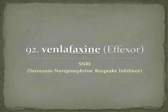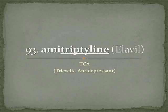Venlafaxine is not an SSRI but an SNRI — selective serotonin norepinephrine reuptake inhibitor — and this is Effexor. You can think of it as effective for antidepression. Amitriptyline is a tricyclic antidepressant. Where SSRIs are named after their neurotransmitter, this is named after the shape of the molecule. Tricyclic means three rings — organic chemistry rings — and this elevates your mood, so Elavil.